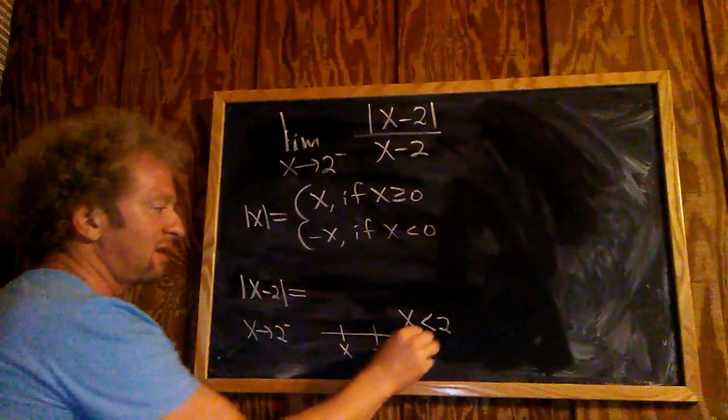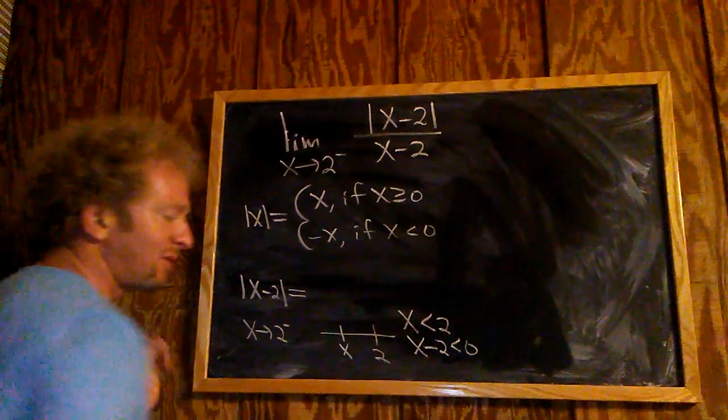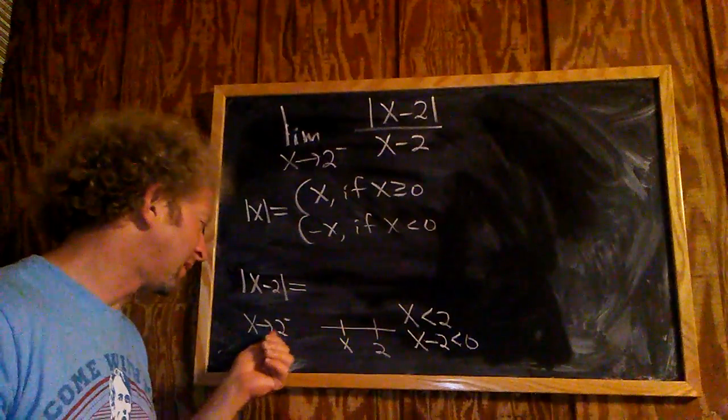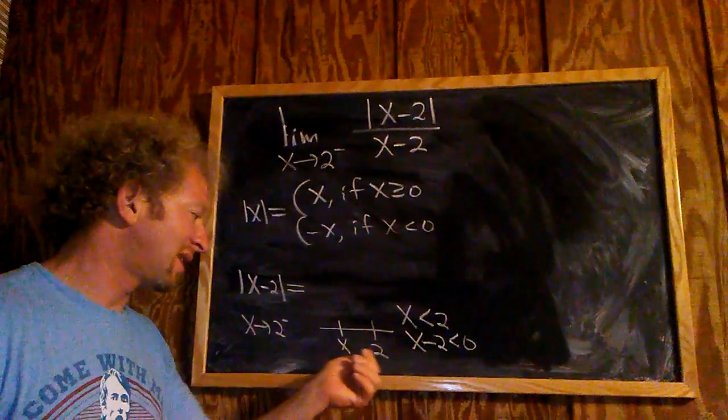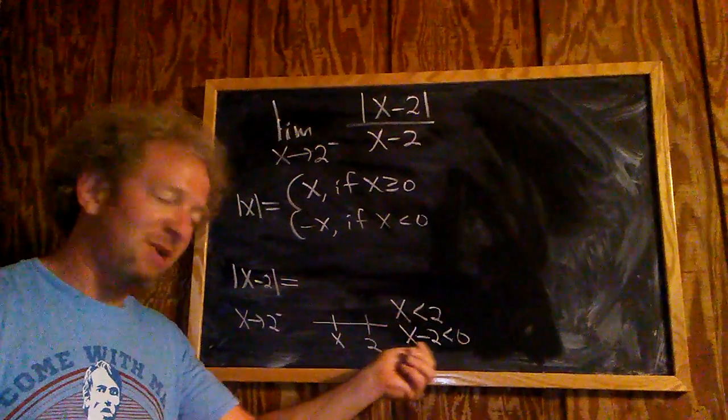If you subtract 2 to make it match this, you get x minus 2 less than 0. Think about which way you're approaching from - if you're approaching from the left, x is less than 2. Subtracting 2, you get x minus 2 less than 0.